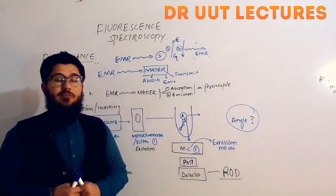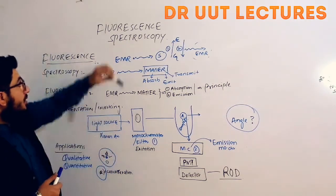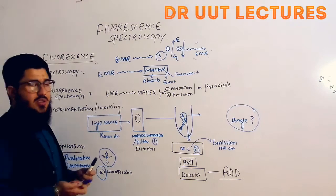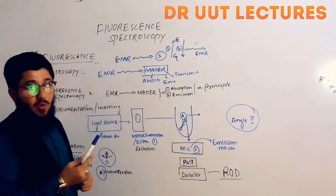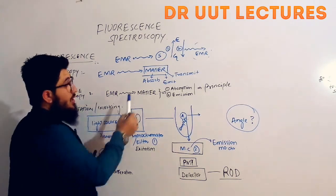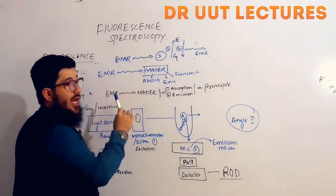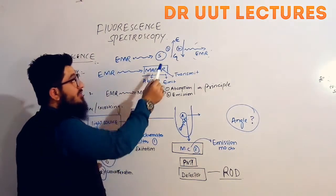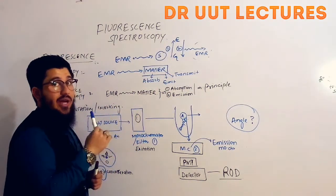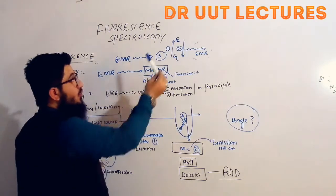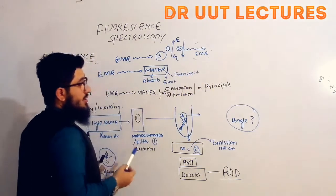In this lecture we will talk about fluorescence spectroscopy. So what is fluorescence? When you target electromagnetic radiations on a sample, the atoms in the sample will absorb those electromagnetic radiations. When they absorb, they will move from the ground state to the excited state, and in the excited state our atoms are unstable, so they will move back towards the ground state.